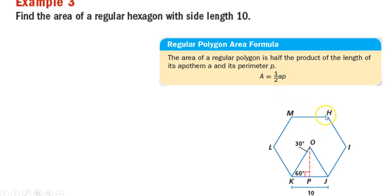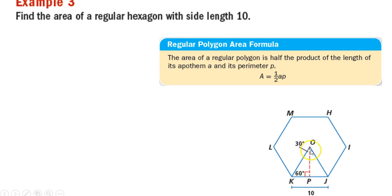Going back to the apothem — what's an apothem? The apothem is this red dashed line here. The apothem is perpendicular to one of the sides of the regular polygon and goes to the center of the polygon. It goes from the center of a polygon to one side, and it has to be perpendicular. So this red dashed line is the apothem of this regular hexagon.